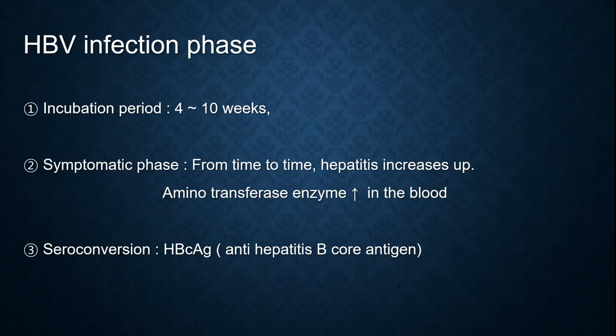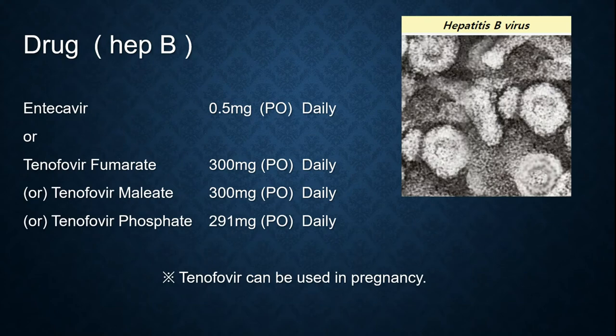The hepatitis B virus infection phase begins with an incubation period of 4 to 10 weeks, followed by the symptomatic phase. Hepatitis activity increases and aminotransferase enzyme levels rise in the blood. There is also seroconversion, where anti-hepatitis B core antigen antibodies occur. The drugs for hepatitis B are entecavir or tenofovir.